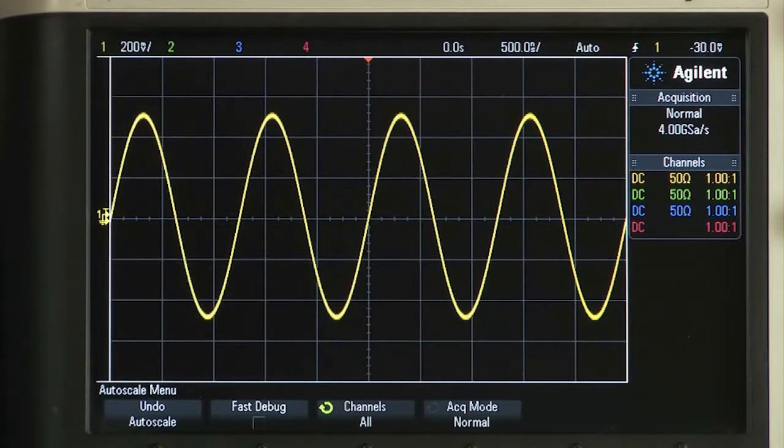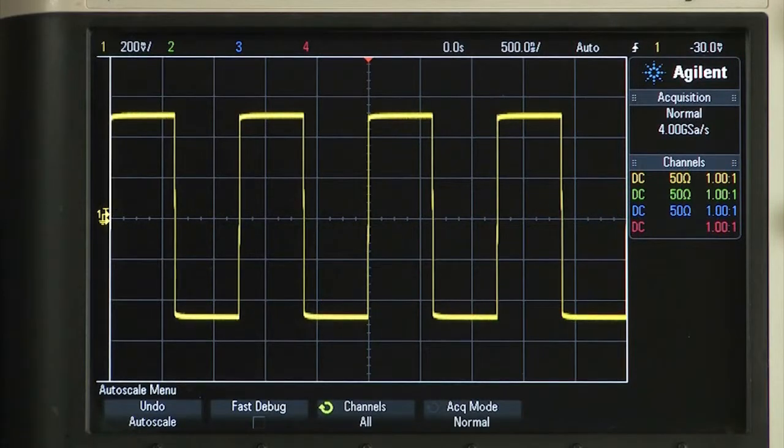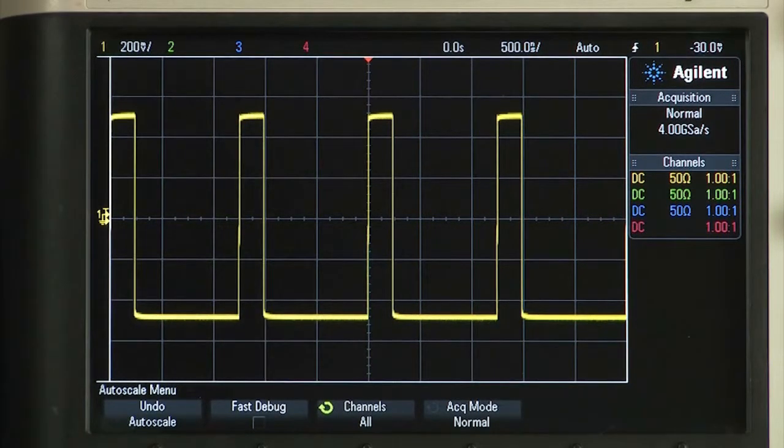Most generators on the market reduce bandwidth by half or more in pulse and square wave mode. Not so with the 33600 series. Depending on the model, you can get square and pulse bandwidths of 50 or 100 megahertz with 2.9 nanosecond rise and fall times.